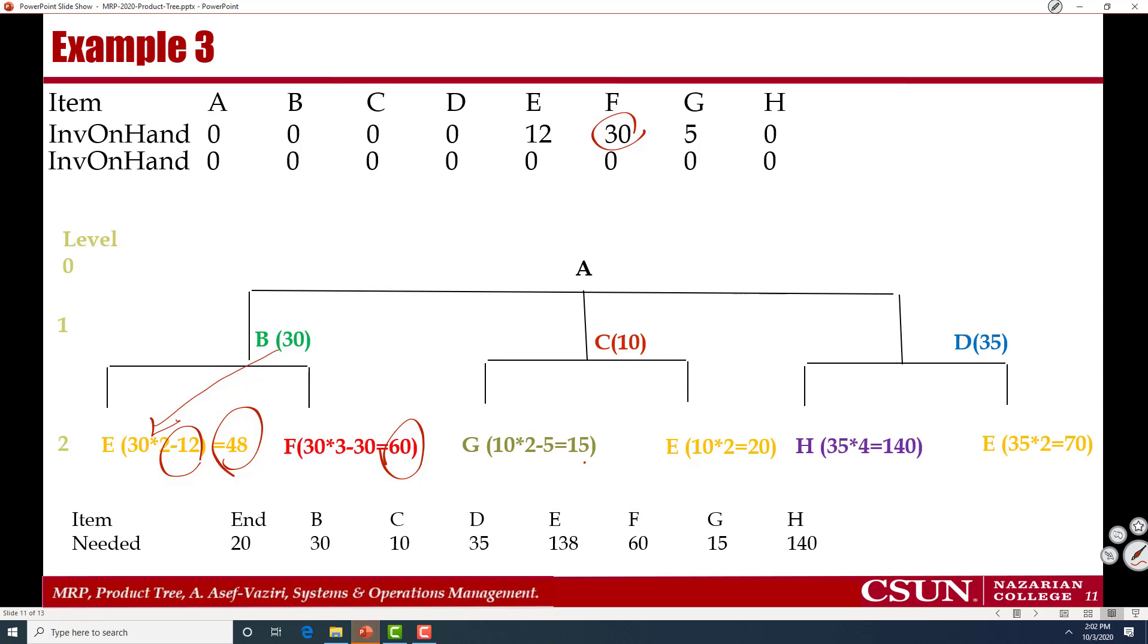10 times 2, 20. And I have already depleted what I had from E. So I have no inventory for E anymore. So I need all 20. H, 35 times 4. As I said, 140. And we have no H. So we need this 140. And E, again, we are already out of E.